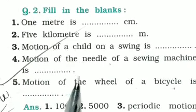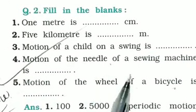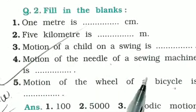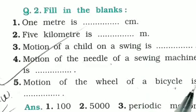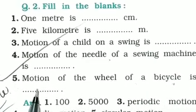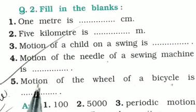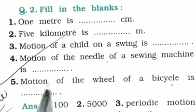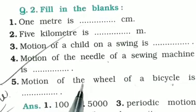Motion of the wheel of a bicycle — what type of motion is it? Circular motion.